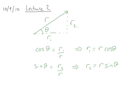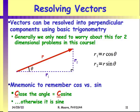What this means is: to resolve a vector into two perpendicular components, if you're closing the angle theta, you use cosine; if you're opening the angle, you use sine. We're going to use this a lot — there are loads of vectors we're always resolving into perpendicular components throughout this course.